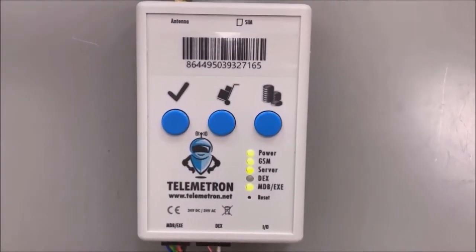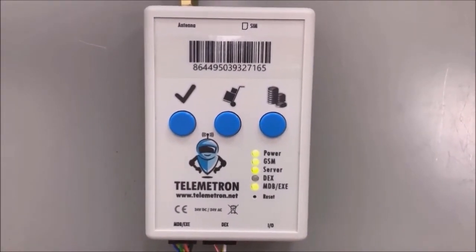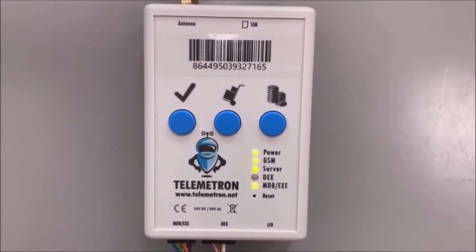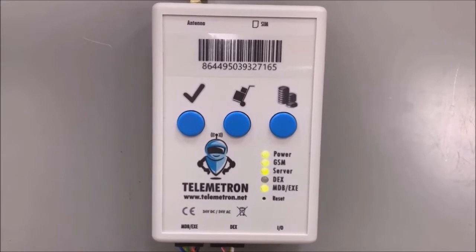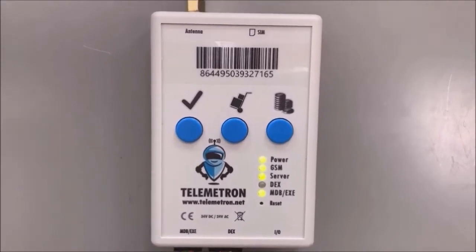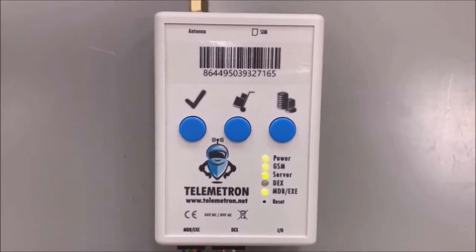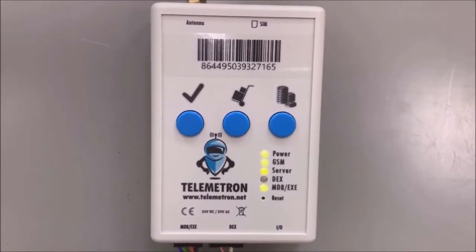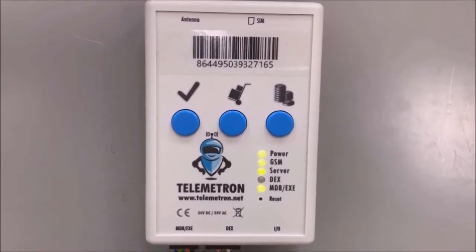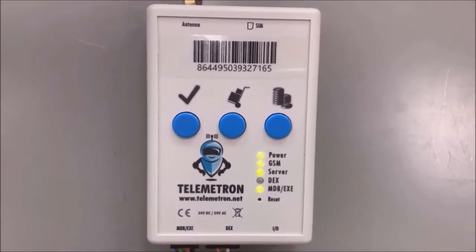In normal mode, three top and one bottom indicators are lit on the modem. The modem receives power, then a GSM connection is established. The modem transfers data to the server. The status of the payment bus is okay. The payment device is now ready for use. The DEX indicator is not lit. The modem has not yet requested an audit from the machine.